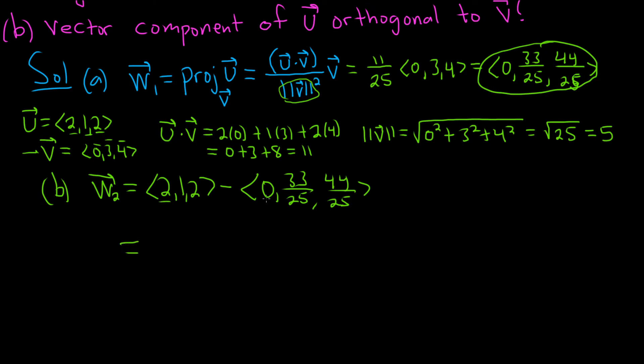we need to write these components over 25. I'm going to write 1 as 25 over 25 to make the subtraction easier, and 2 as 50 over 25. You can multiply by 25 over 25, but this is easier for me to think about.